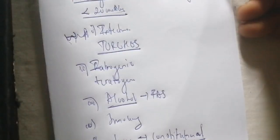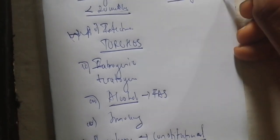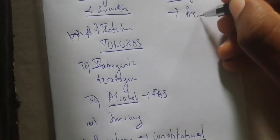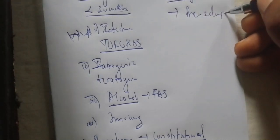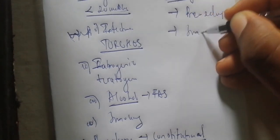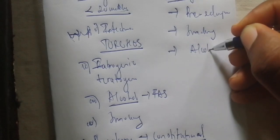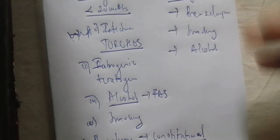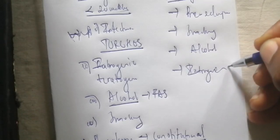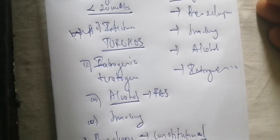For asymmetric intrauterine growth restriction, pathologies occur after 20 weeks of gestation. Examples include pre-eclampsia, which generally occurs after 20 weeks of gestation. If the mother starts smoking or taking alcohol after 20 weeks of gestation, it can be associated with asymmetric intrauterine growth restriction. Iatrogenic or teratogenic medication taken after 20 weeks of gestation can also be involved.